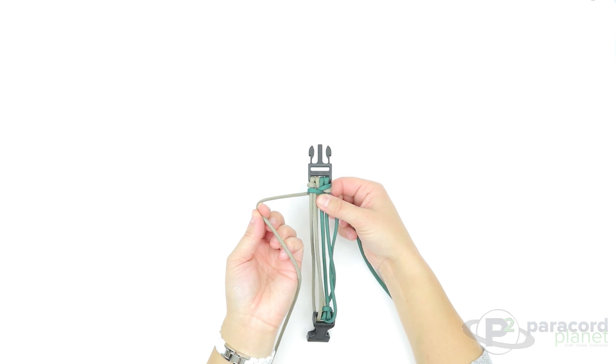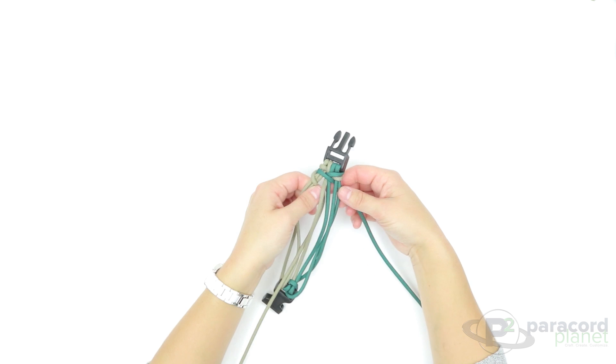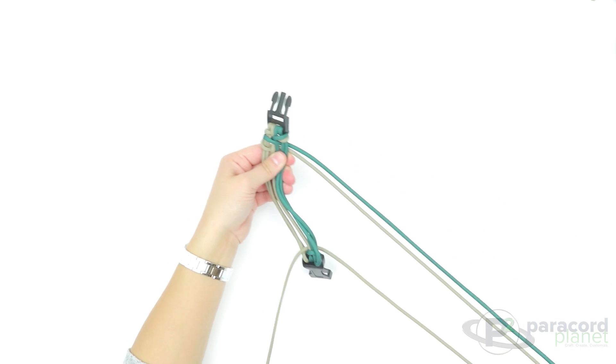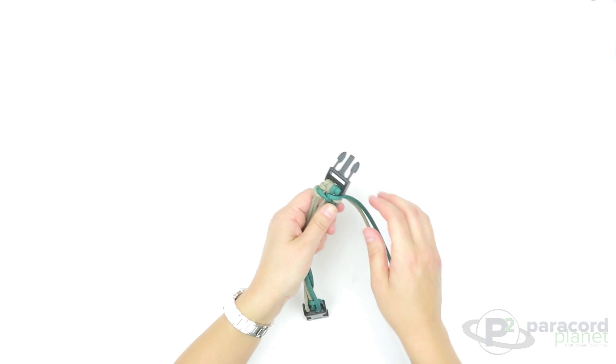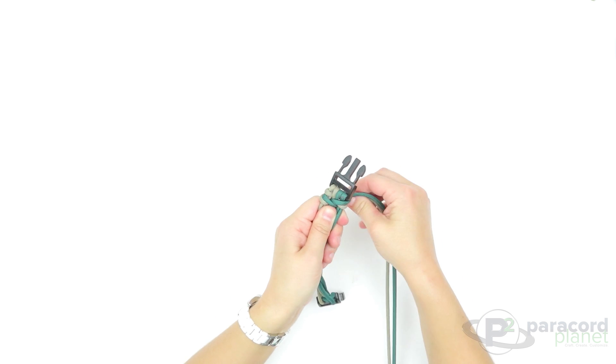You'll take your cord again, go over two and behind four. Pull it tight and push it up. Do that after every weave.